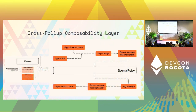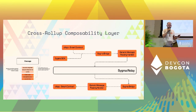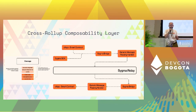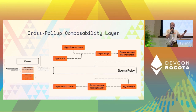Here is our proposal: a cross-rollup composability layer. Imagine one rollup on top and another rollup below, with a relay — an off-chain relay network — in the middle. The main concept is that you have generic message-passing smart contracts deployed on both rollups, and a so-called adapter contract which will prepare and parse the necessary messages. This setup will help any smart contracts from one rollup communicate with another rollup or even with Layer 1.